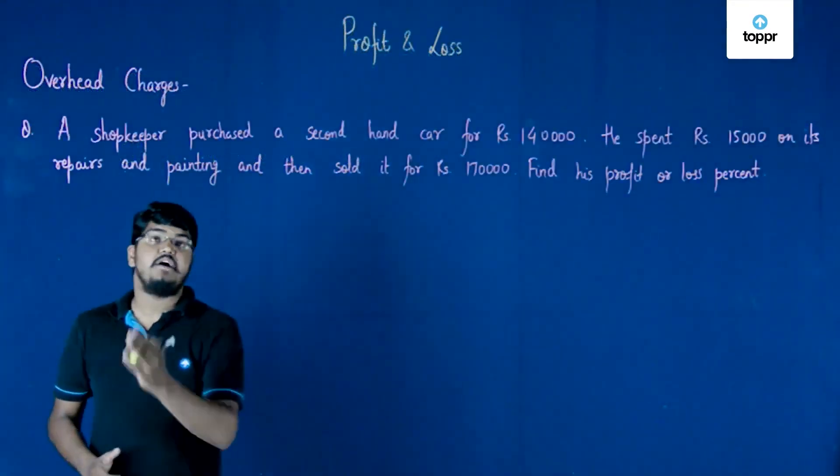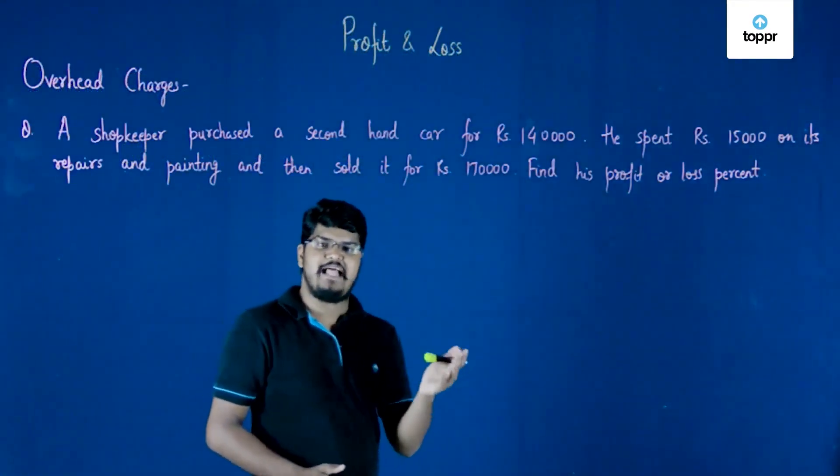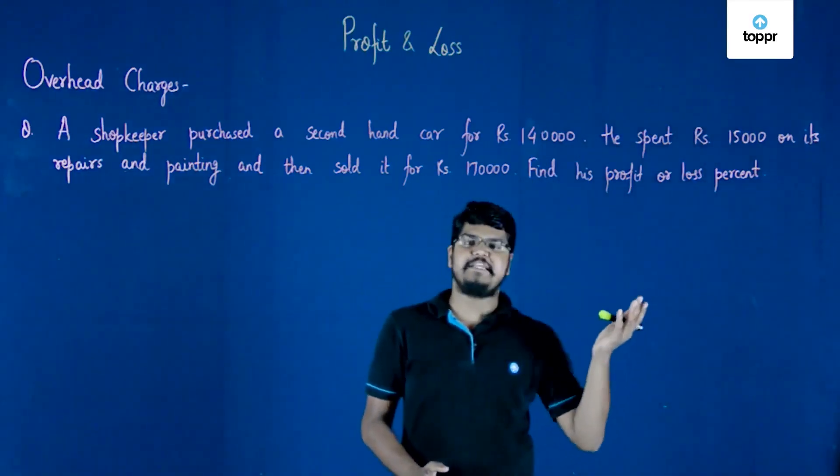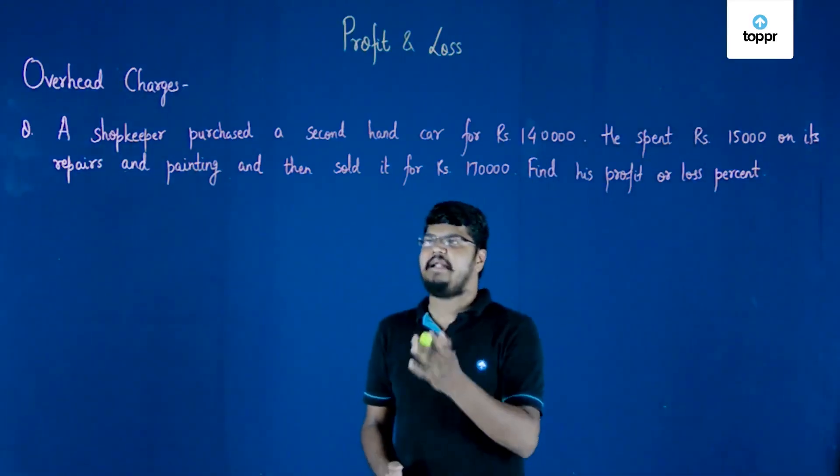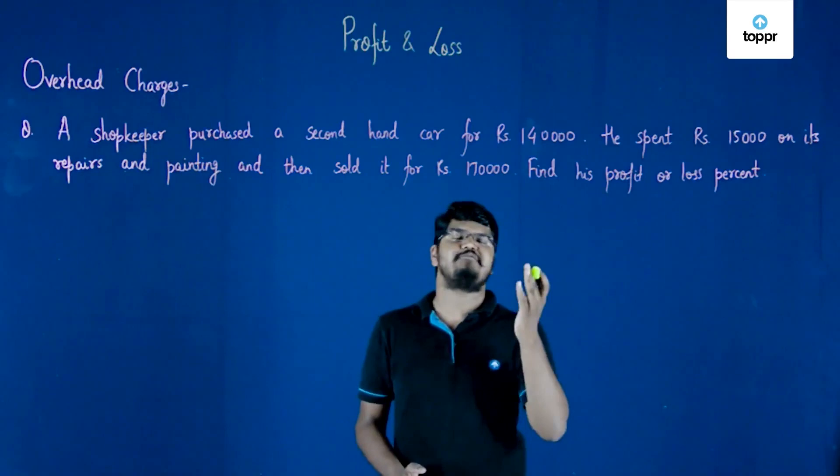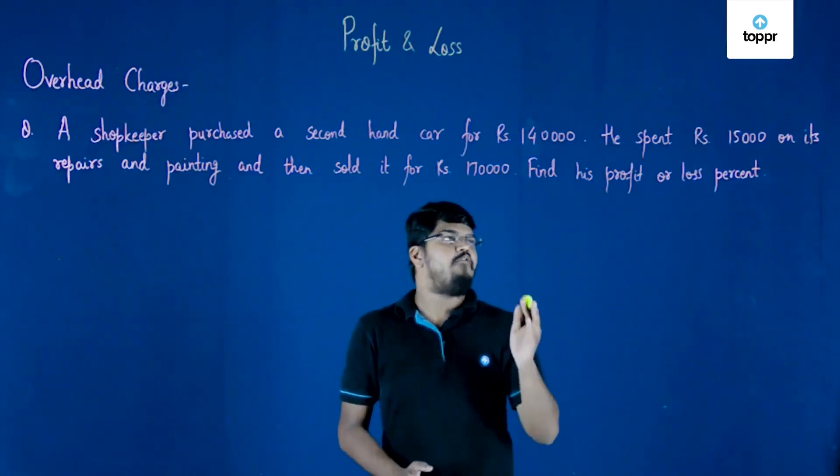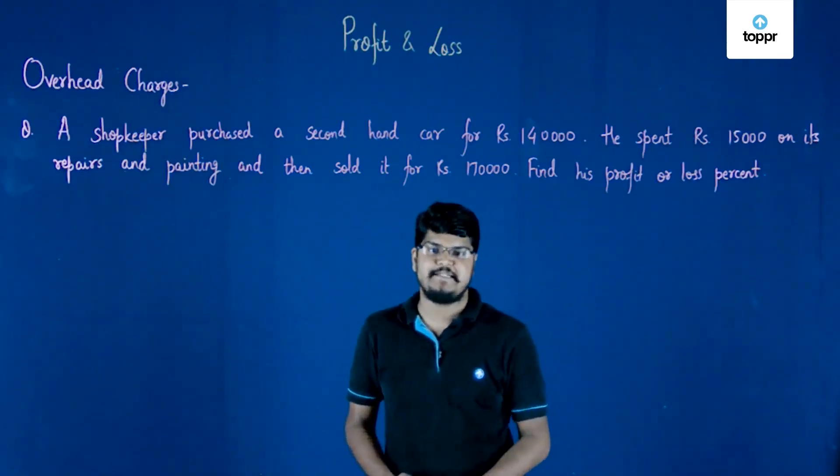The question is: A shopkeeper purchased a second-hand car for rupees 1 lakh 40,000. He spent rupees 15,000 on its repairs and painting and then sold it for rupees 1 lakh 70,000. Find his profit or loss percent.